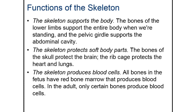Another obvious function is that the skeleton protects soft body parts. Your skull is going to protect the brain. Your rib cage is going to protect the heart and the lungs. All these organs are quite fragile without the bones around them, so by having the skeletal system, we ensure they're kept safe and free from damage.